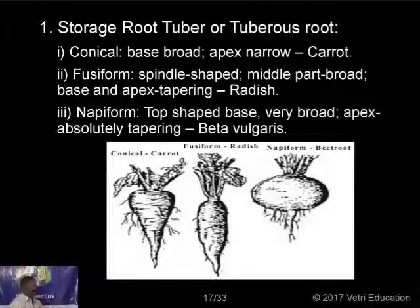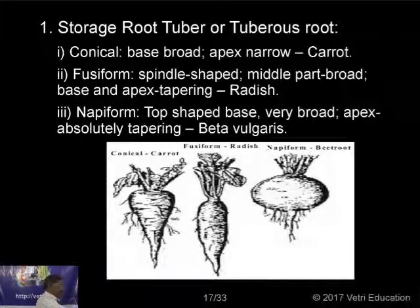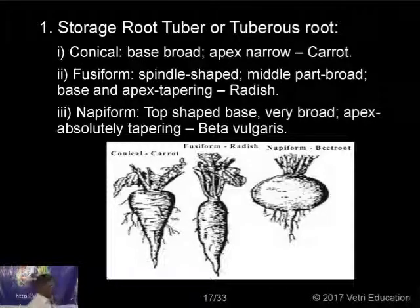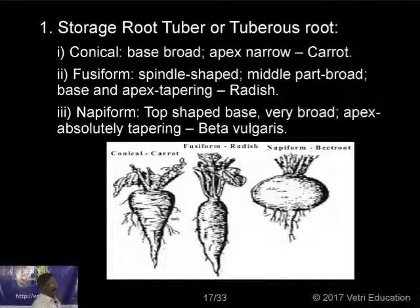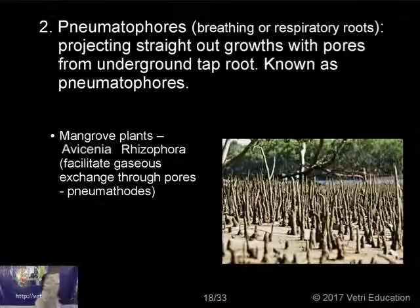The storage roots have different shapes depending on the type. The first is conical shape, where the base is very broad and it slowly tapers — found in carrots. In the fusiform type, it is swollen in the center and tapers on both sides — example is radish. In the napiform type, it is swollen and abruptly tapers — found in beetroot.